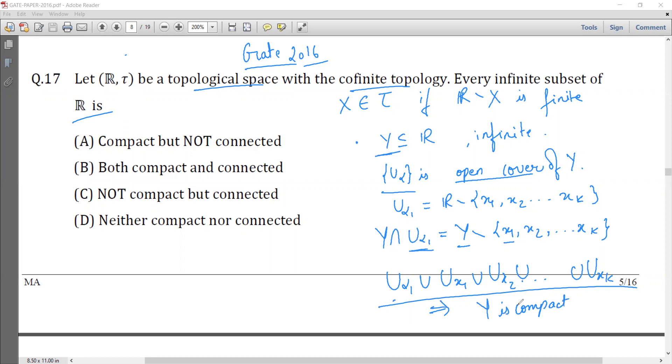So any infinite set in an infinite topological space with cofinite topology is always compact. Note that we did not use anything about R here. We just used that R is infinite and we took Y as infinite subset of R.